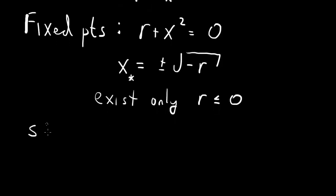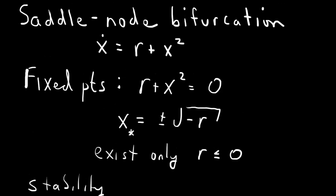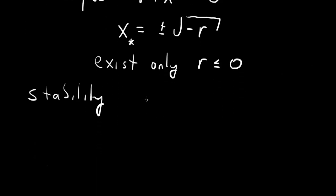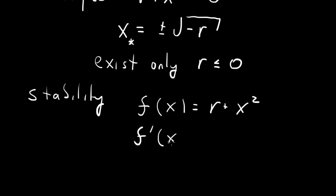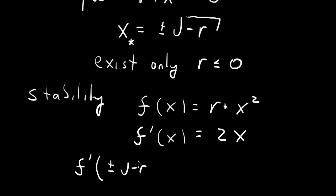Now we look at the stability of the fixed points. The right-hand side of the differential equation is f(x) equals r plus x squared. The stability depends on the derivative of the right-hand side, which is 2x. So the derivative evaluated at the two fixed points, plus or minus root of minus r, is equal to plus or minus 2 times the square root of minus r.